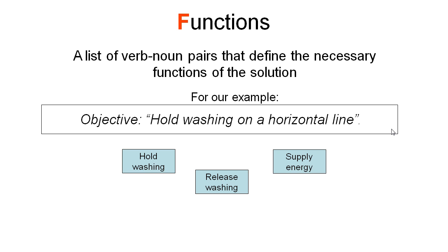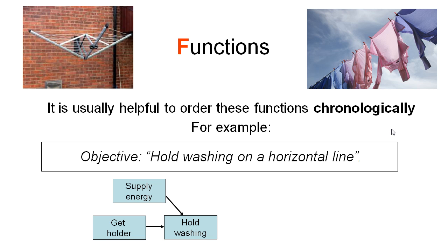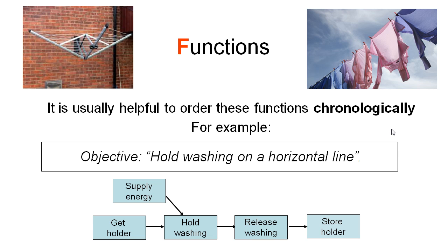What we usually do with our functions to make sure we haven't missed anything is order them chronologically. In this case we would start by getting our holder, then hold the washing — recalling that to do this we need to supply some energy. After the washing has dried we release it, and then we store our holder. So a very simple chronological timeline to remind us of the flow of these functions.